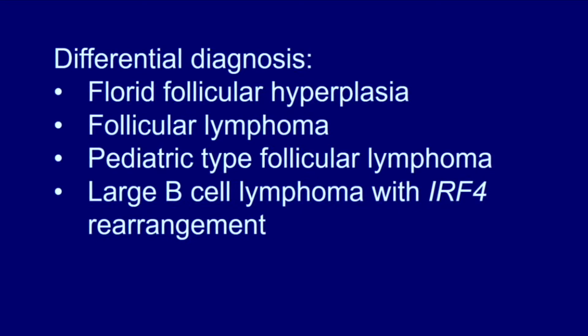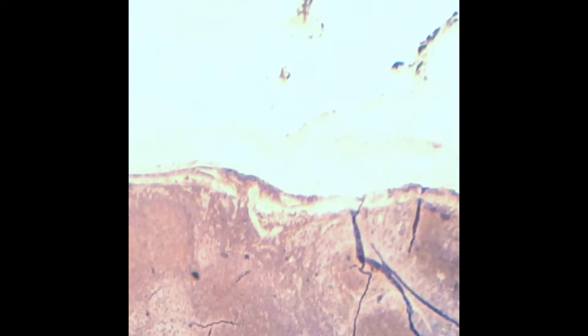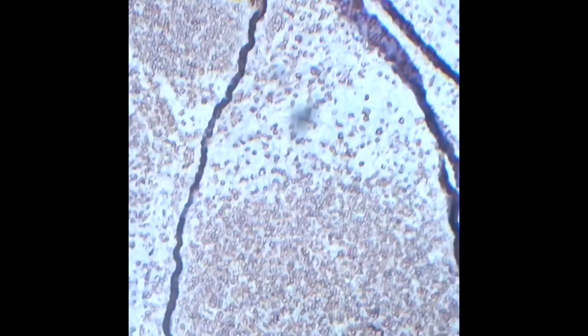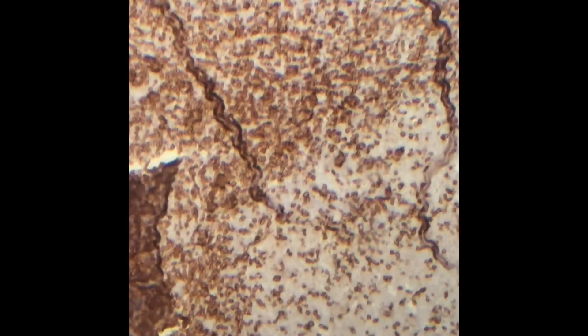Now we're going to look at immunohistochemistry stains. CD20 shows diffuse positivity within the nodules, within the atypical follicles, and you can see that the paracortex has some scattered B cells in it as well. CD3 has a little bit of background, but it is negative in the follicles.